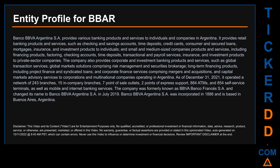The company also provides corporate and investment banking products and services such as global transaction services, global market solutions comprising risk management and securities brokerage, long-term financing products including project finance and syndicated loans, and corporate finance services comprising mergers and acquisitions and capital markets advisory services to corporations and multinational companies operating in Argentina. As of December 31, 2021, it operated a network of 243 branches, 15 in-company branches, 7 point of sale outlets, 2 points of express support, 884 ATMs and 854 self-service terminals, as well as mobile and internet banking services. The company was formerly known as BBVA Banco Franks SA and changed its name to Banco BBVA Argentina SA in July 2019. Banco BBVA Argentina SA was incorporated in 1886 and is based in Buenos Aires, Argentina.